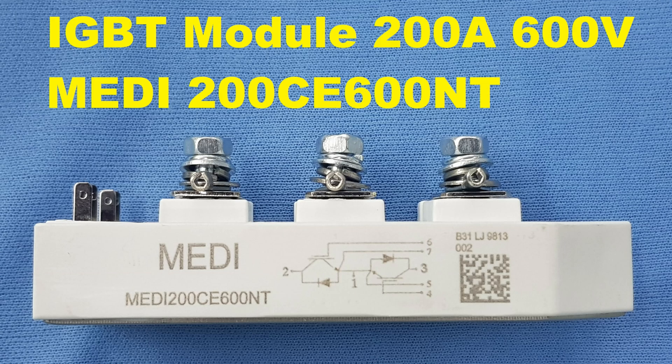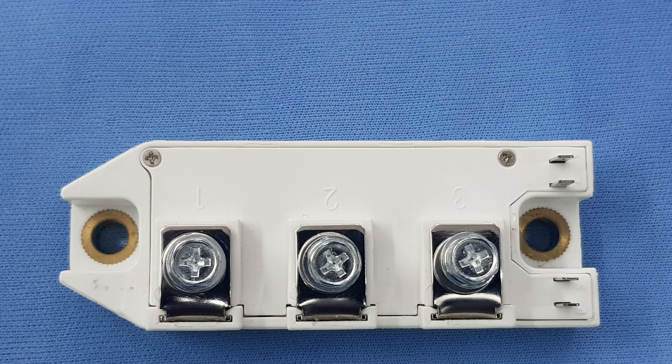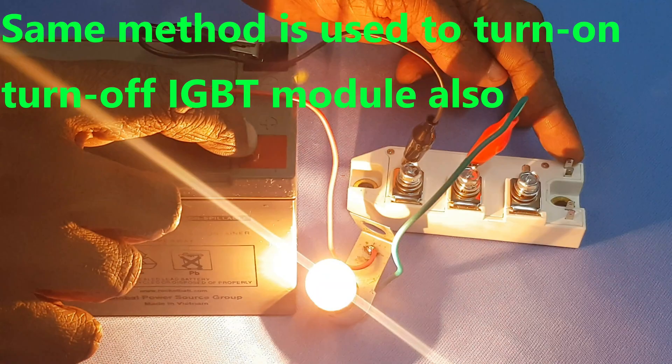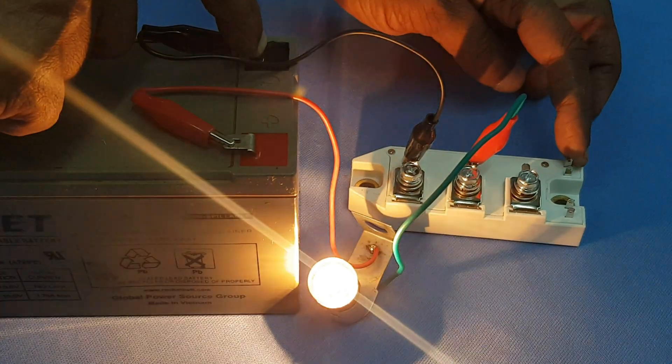Testing the common emitter IGBT module May D200CE600NT. Same method is used to turn on or turn off the IGBT module.